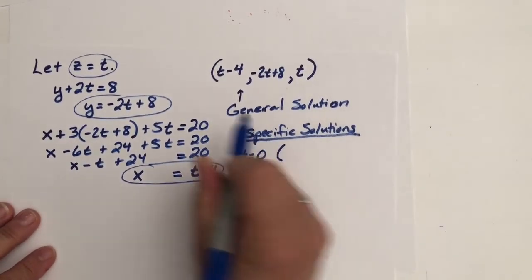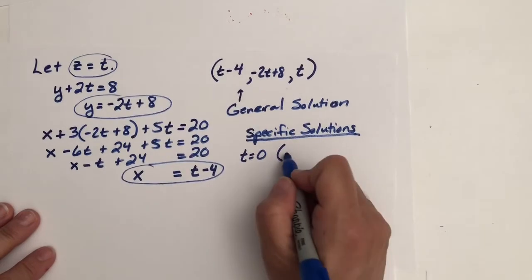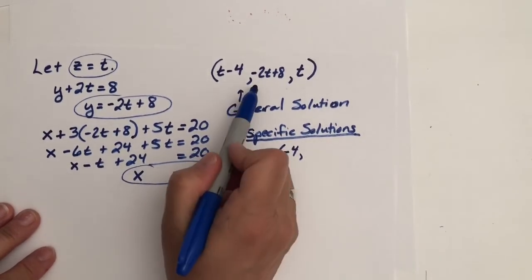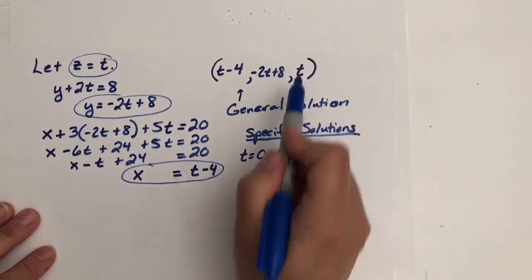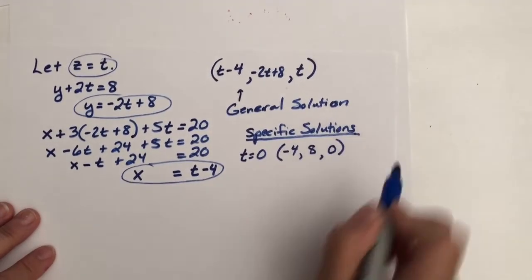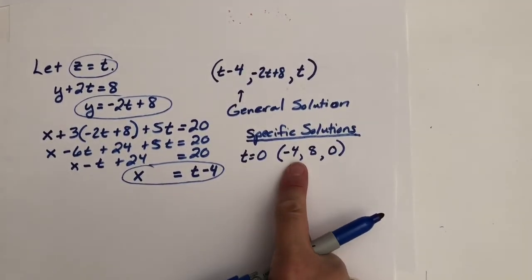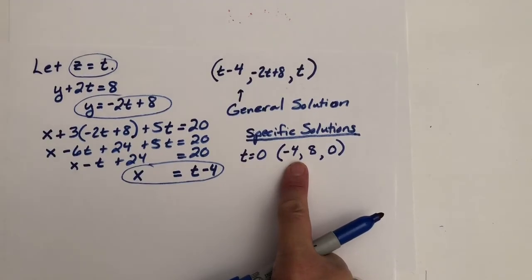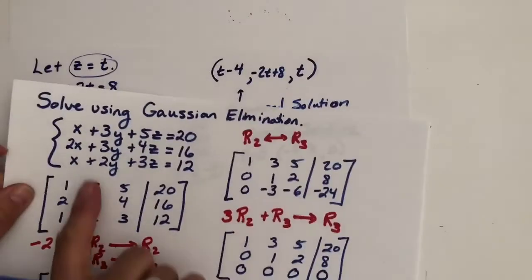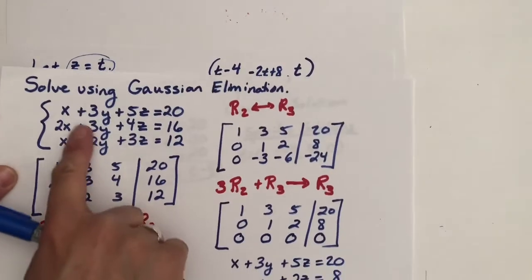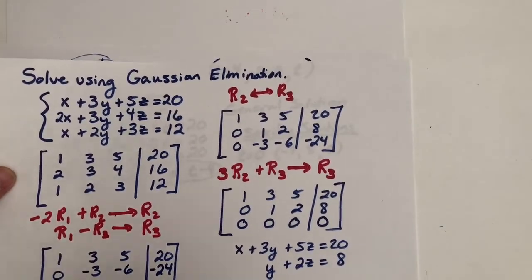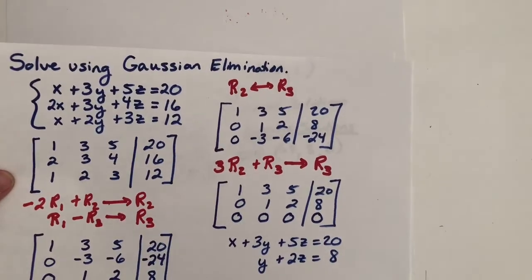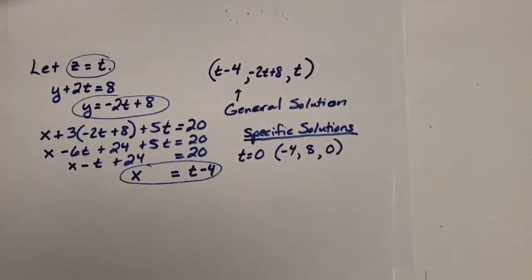I would probably stick with numbers that are easy to work with, like t equals zero. Pop that in, and you would get zero minus four, negative two times zero plus eight, and zero. And if you substitute negative four, eight, zero into any of these or into all of these equations, you would find it would be a solution. You could take time and try that. I'm not going to right now, but it absolutely could be done.